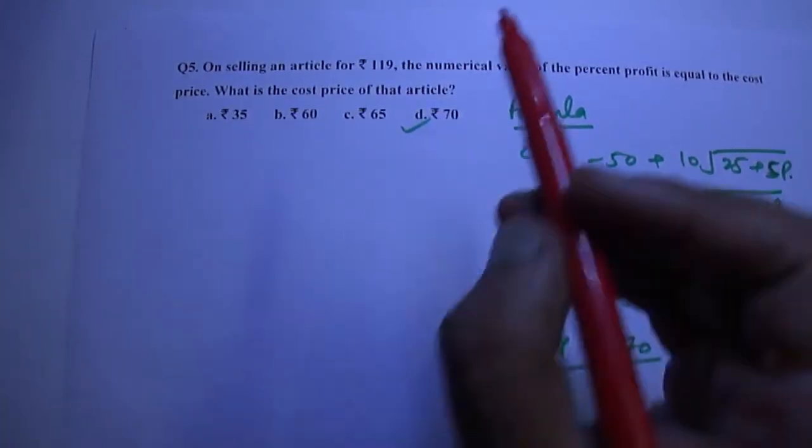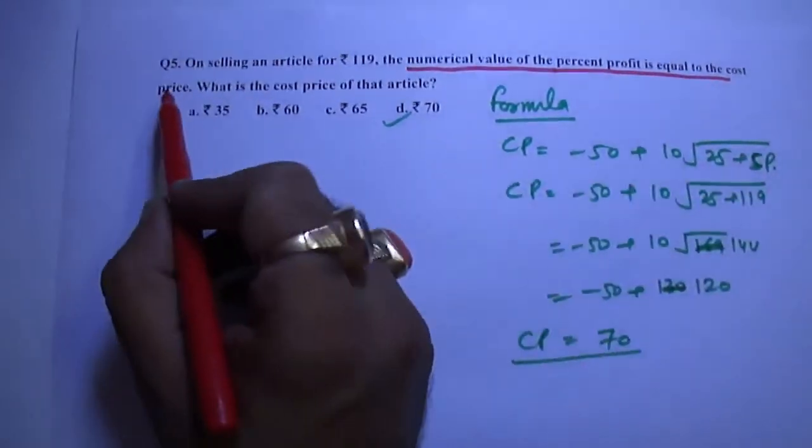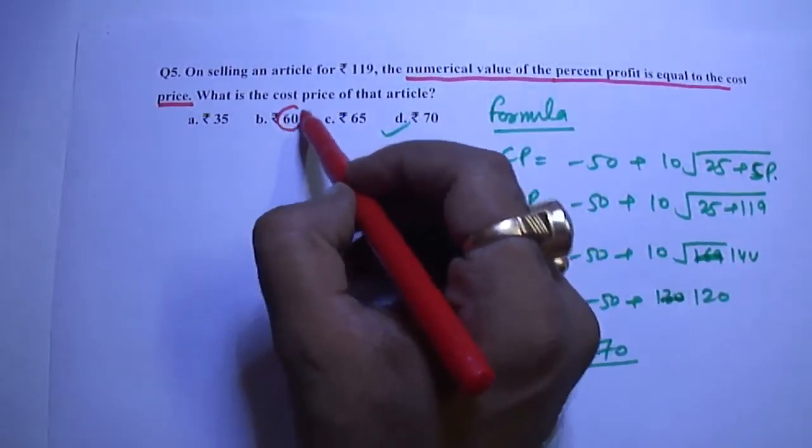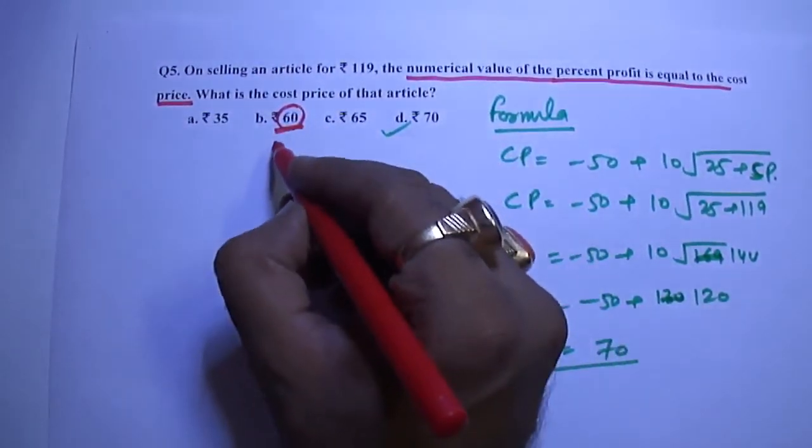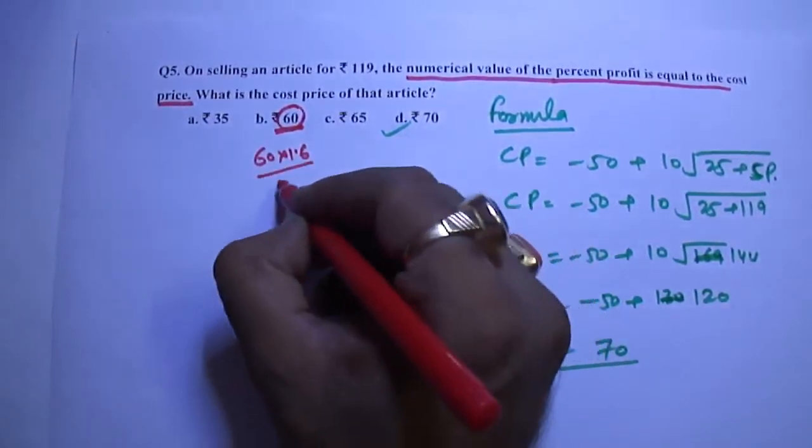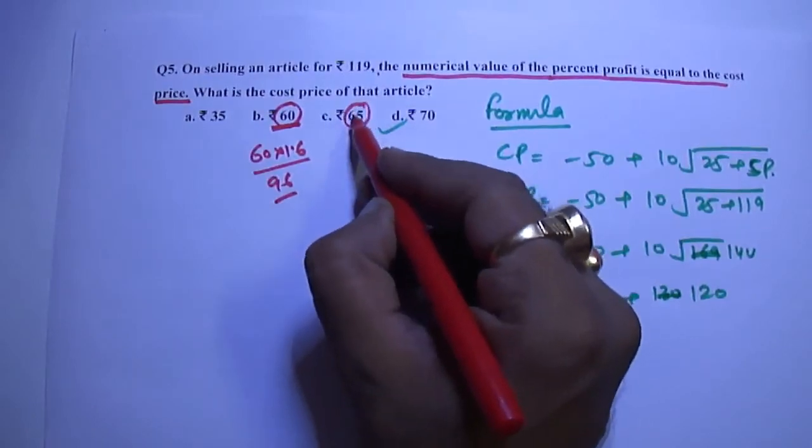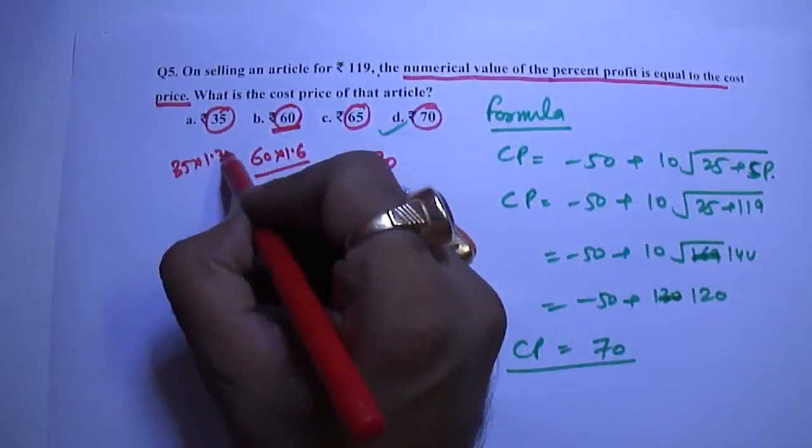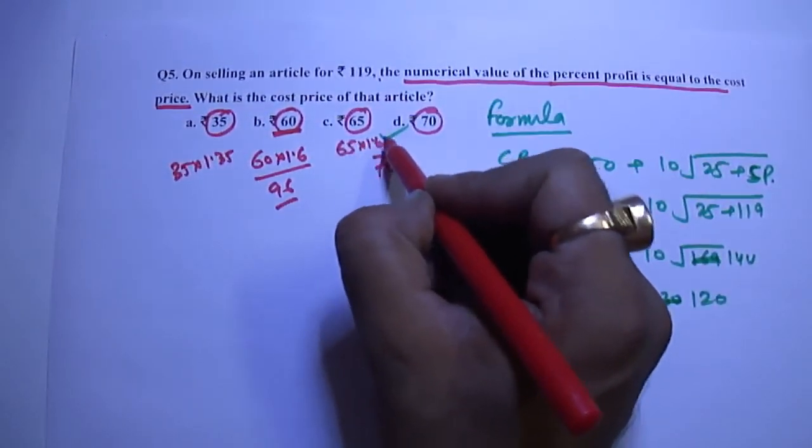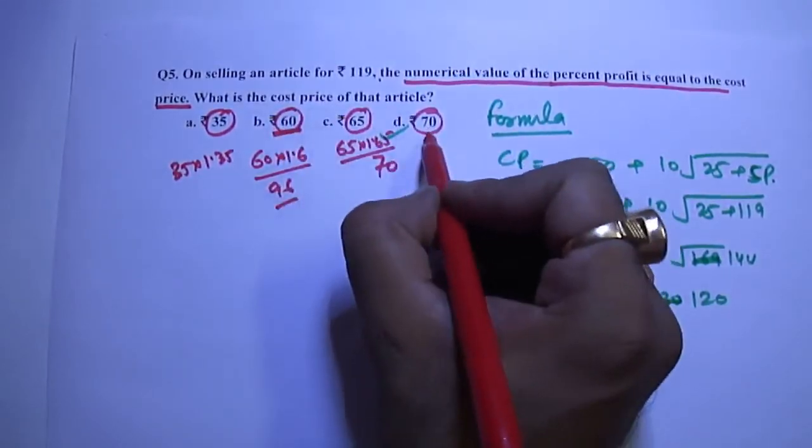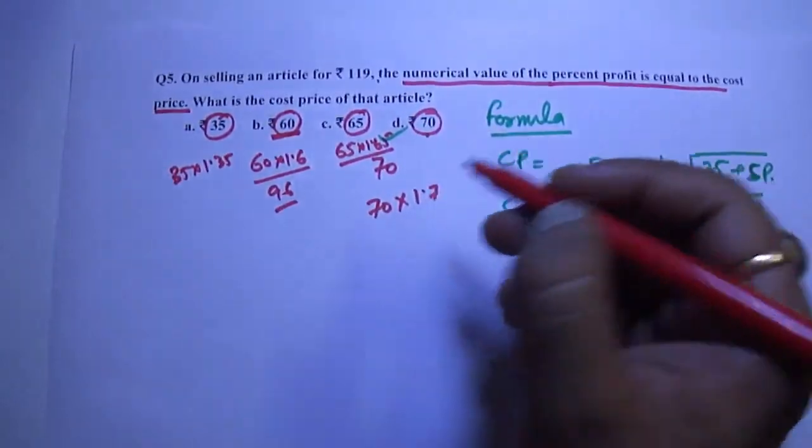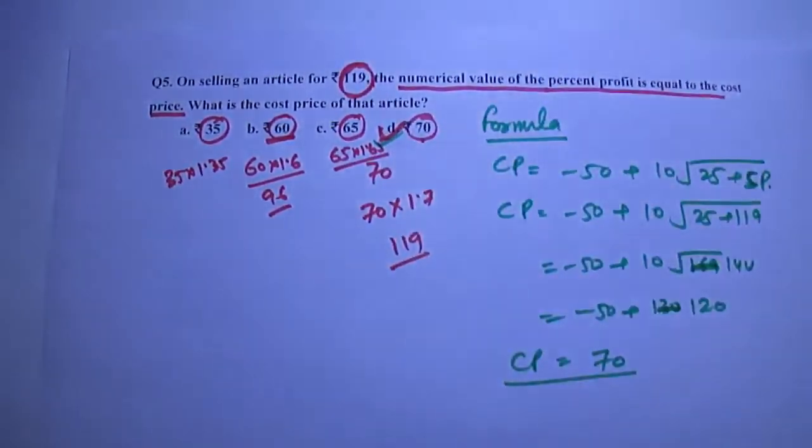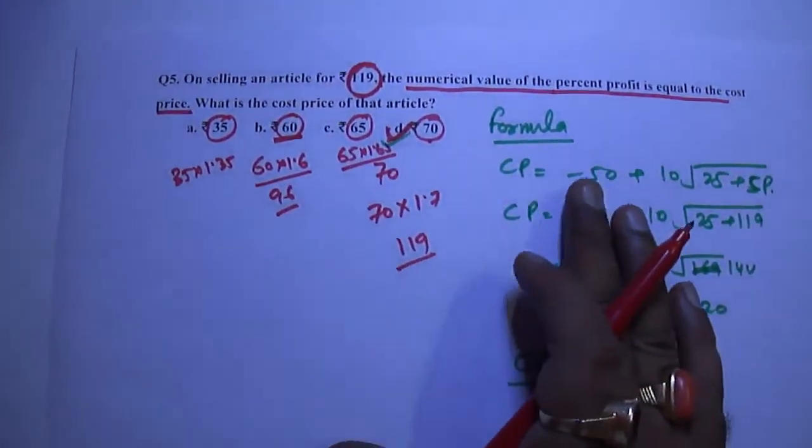One more logic. In this case, it is given that the numerical value of the percentage profit is equal to the cost price. So no need to start with this formula. We can directly start with the option. This is 60. CP 60, profit percentage 60, so its value would be 1.6 times 60, that is 96, not equal to 119. 65 is very odd number, 70. We will start with 70. We can start with 35 also, but in this case we have to multiply by 1.35. For 65, we will have to start with 1.65. So initially we started with 60, then we go with 70 because 70 is an easy number. 70 times 1.7 is 119, which gives us this. So our answer is D. You can use formula or you can use option based.